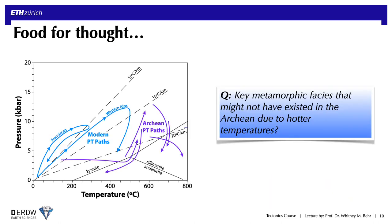Here's a food for thought question, if you're so inclined. Looking back at the plot of Archean versus modern pressure-temperature paths in conjunction with some of the other diagrams in this lecture: can you figure out which metamorphic facies might not have even existed in the Archean due to these hotter temperatures? And can you think about what this might mean for our ability to recognize tectonic regimes — for example, the onset of subduction — in the deep past?